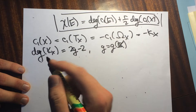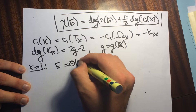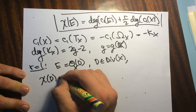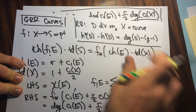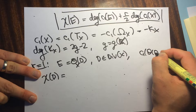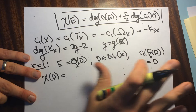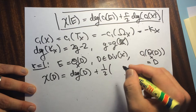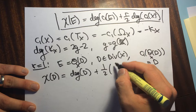Let's look at the special case when the rank is equal to 1, i.e. E is equal to O of D for some divisor D. In this case the formula becomes: the Euler characteristic of D equals the degree of C1 of O of D — which by the normalization property of Chern classes is just D — plus one-half times the degree of C1 of X, which is negative (2G minus 2).